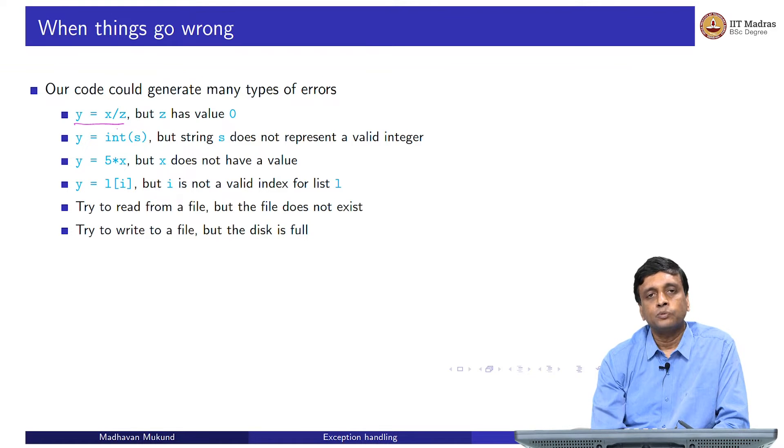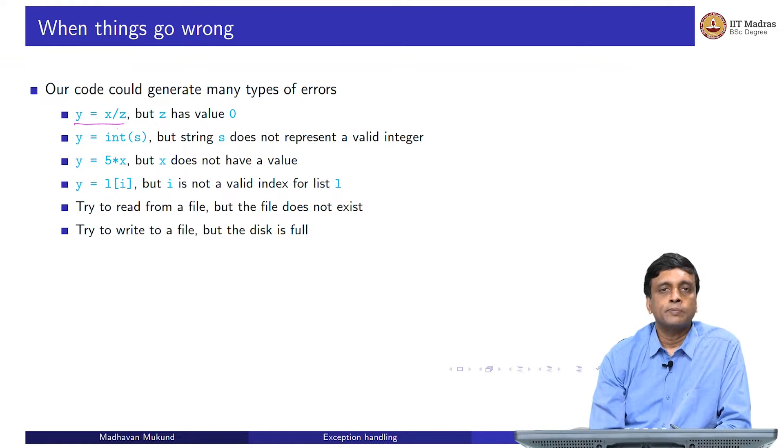And finally, there are things which could be outside the scope of the program itself. The values are not wrong inside the program, but you are interacting with something outside the program. A typical example is when you are trying to read a file. Supposing you try to open a file, but the file name that you are trying to use does not exist, somebody has renamed the file or deleted it, then your program will throw an error. Similarly, when you try to write a file, you might well find that the disk is out of space, you want to write a large file, there is not enough space on the disk.